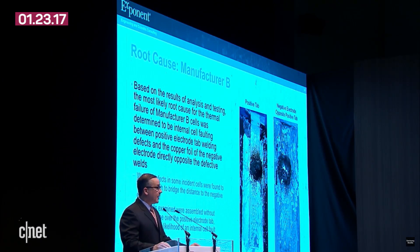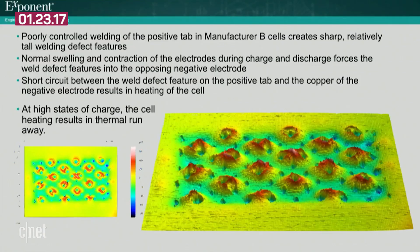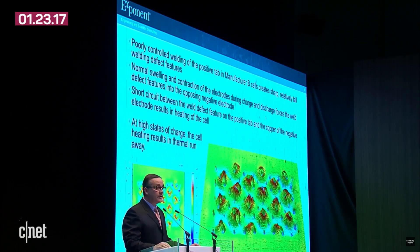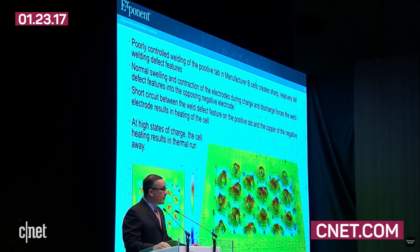The weld defects were related to the height of the features left behind by the ultrasonic welder used to attach the positive tab to the positive electrode current collector. Normal swelling and contraction of the electrodes during charge and discharge forces the weld defect features into the opposing negative electrode. Short circuit between the weld defect feature on the positive tab and the copper of the negative electrode results in heating of the cell. At high states of charge, the cell heating results in thermal runaway.